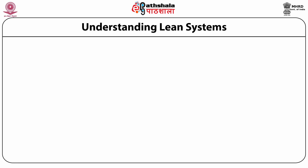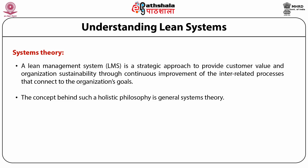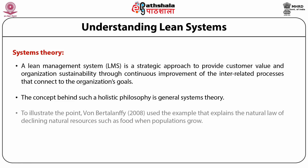Understanding lean system theory: a lean management system is a strategic approach to provide customer value and organizational sustainability through continuous improvement of the interrelated processes that connect to the organization goals. As the environment influences how the organization operates, management decisions need to focus not only on individual parts but also on the entire value chain. The concept behind such a holistic philosophy is General System Theory, whose fundamental philosopher was Ludwig von Bertalanffy. In every phenomenon, certain natural laws apply and affect any system.